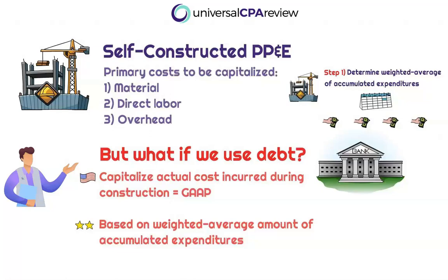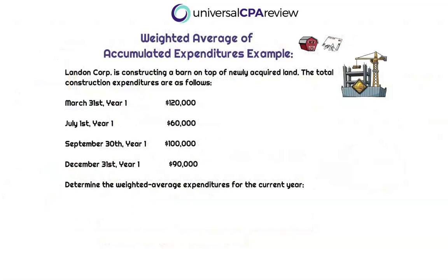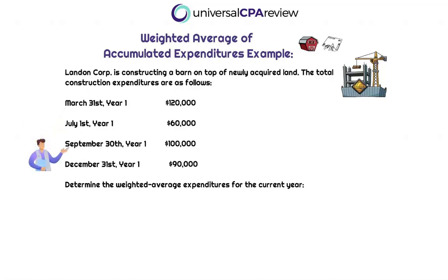This is step one in our mental map, and we need to be able to make this calculation work. So let's go through this with a quick example. We've got Landon Corp once again — Landon is constructing their barn on top of the newly acquired land. The total construction expenditures are as follows: on March 31st, year one, they had $120,000 in expenditures and another $60,000; on September 30th, year one, $100,000; and finally, on the last day of the year, December 31st, year one, they had $90,000. So we want to determine the weighted average expenditures for the current year.